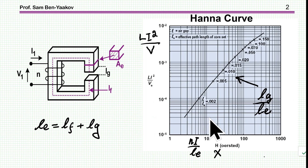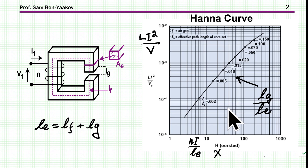HANA Curve has been around for a long time. It was invented by HANA in 1927, and since then has been used quite a bit to design inductors with a gap — power inductors that have to store energy with DC current through them. Today it's not used that much because we have better tools to do the design. However, I think that HANA Curve can teach us a lot about magnetics in general, and in particular about power inductors with gap or distributed gap. And this is the objective of this presentation.